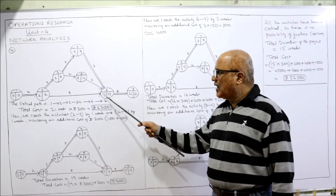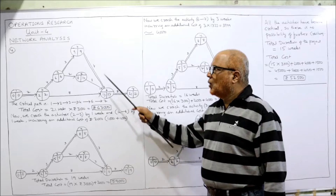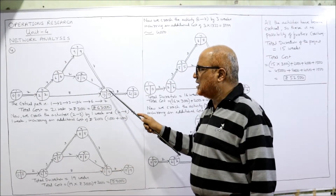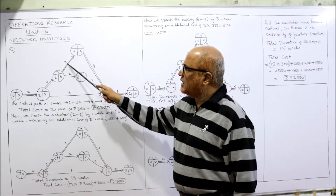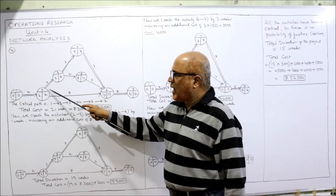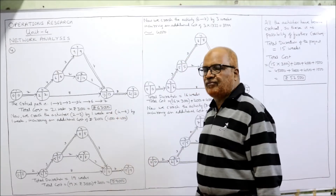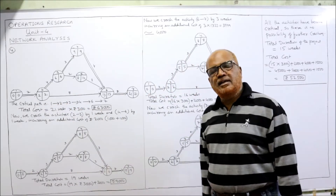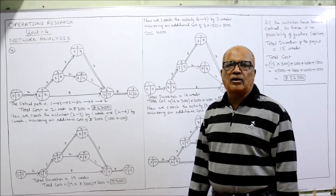Backward pass LFT: last event is 21. Subtract: 21−8=13, 13−4=9, 13−4=9, 13−3=10. At node 2, two arrows merge — take the minimum: 9−3=6 or 10−2=8 — minimum is 6. Then 6−4=2 or 13−8=5 — minimum is 2. Then 2−2=0. Critical path is where EST and LFT values are the same, shown by double lines.